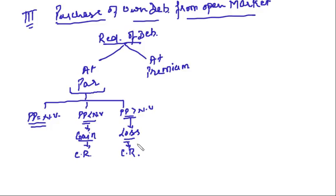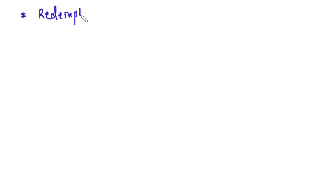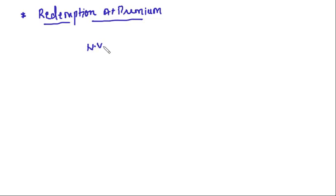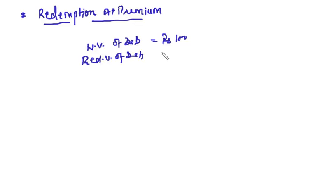Now in this lecture, what we are going to discuss is Redemption at Premium — redeeming debentures by purchase of own debentures from open market. The nominal value of the debenture is 100 rupees and the redeemable value is 105 rupees, that is you are redeeming the debenture at a premium of 5 rupees. That means you have to pay 105 rupees to the debenture holder. Now again we have three cases.